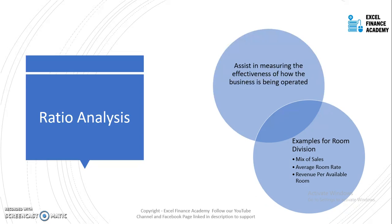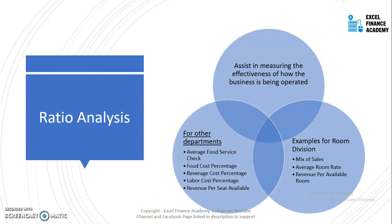Further examples of ratio analysis include occupancy percentage. For other departments, it also includes food and beverage check average, food cost percentage, beverage cost percentage, labor cost percentage, and revenue per seat. For other departments, it can include number of bookings, number of guests per occupied room, or average covers per occupied room, and so on. We will look at all the possible matrices in our real examples.